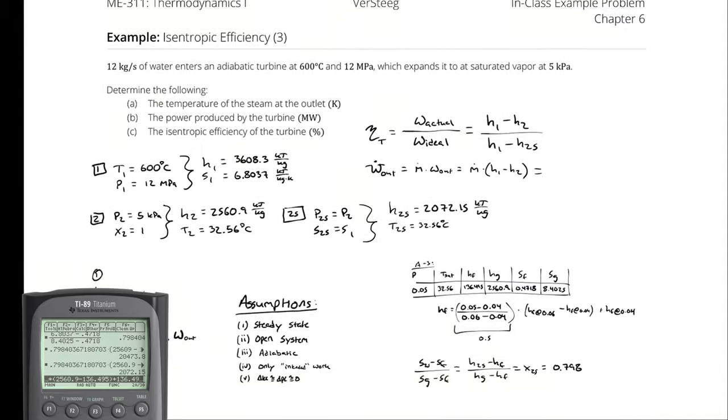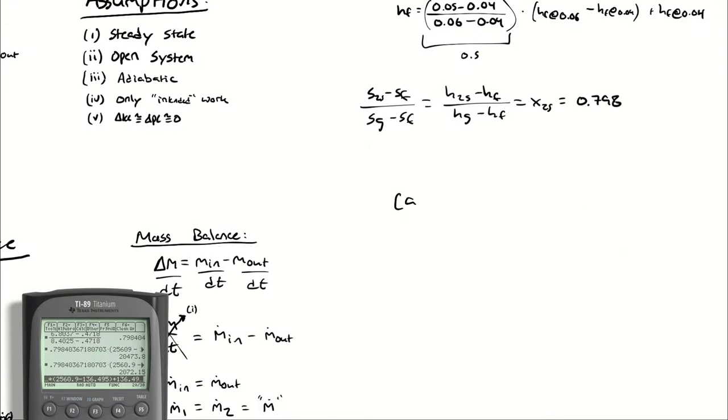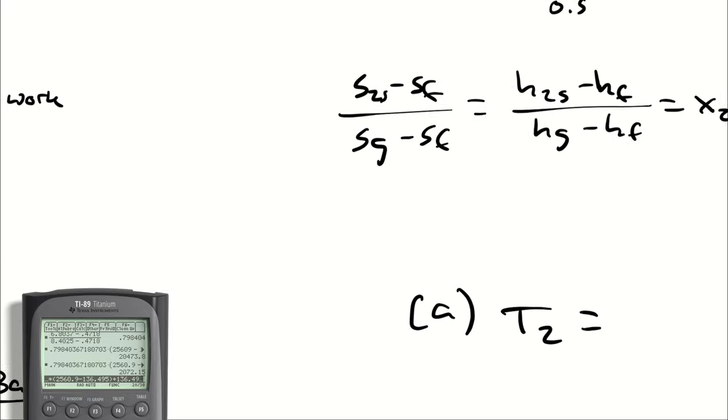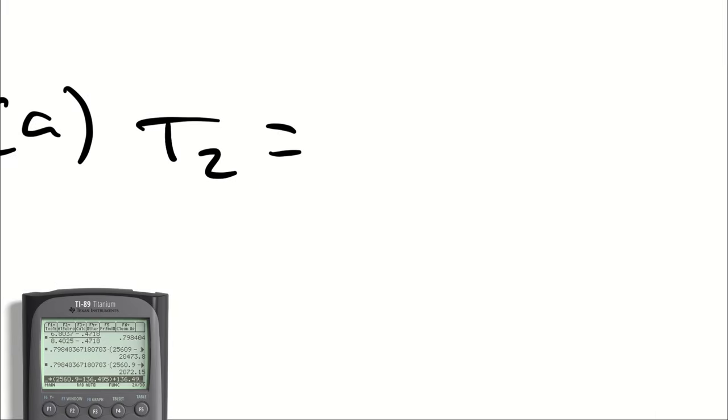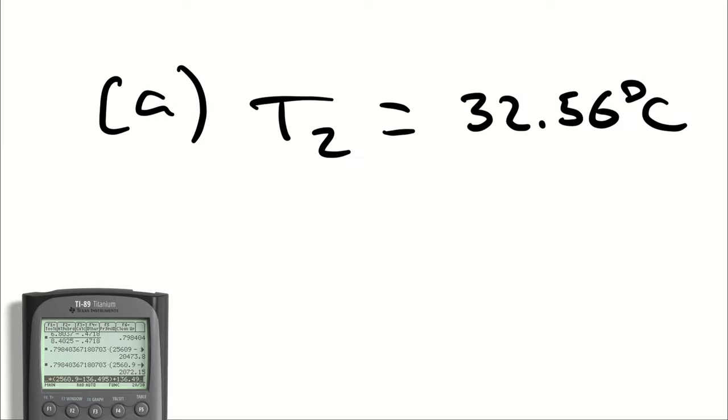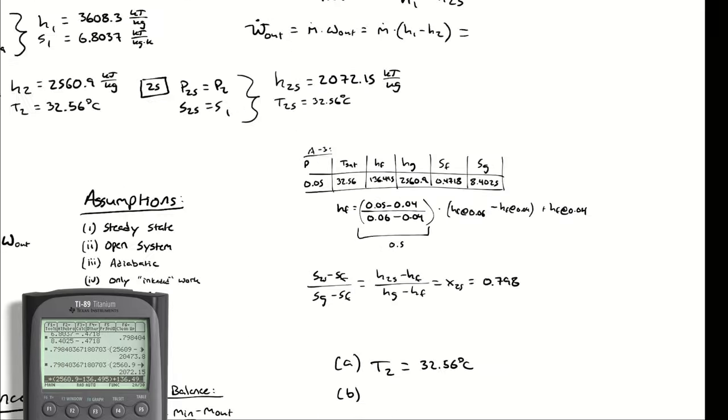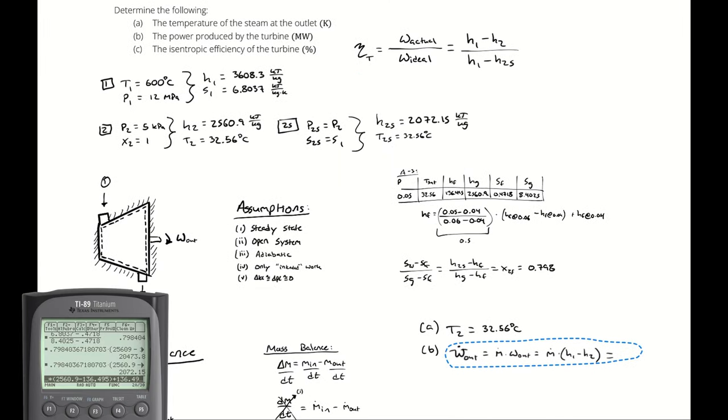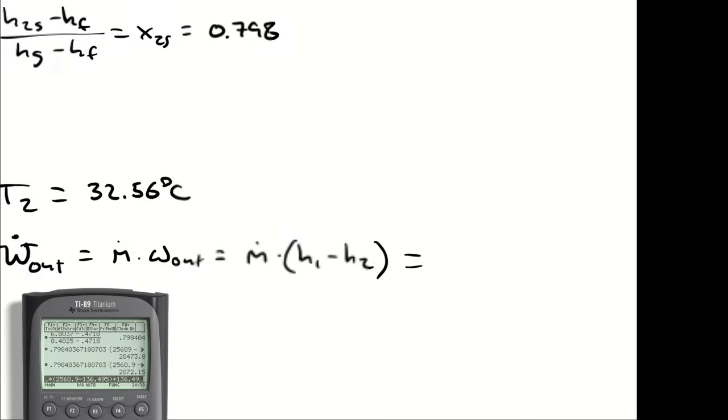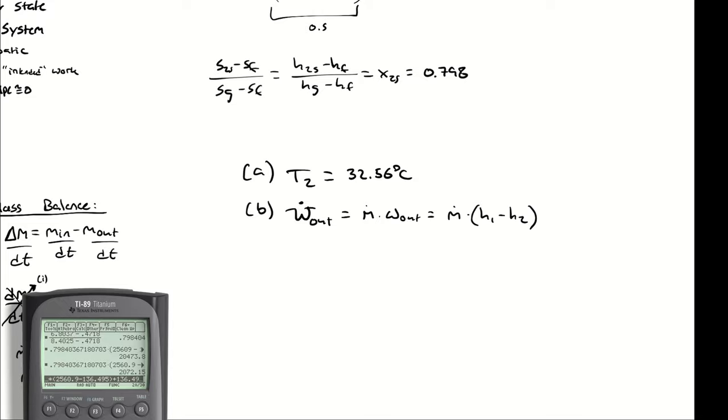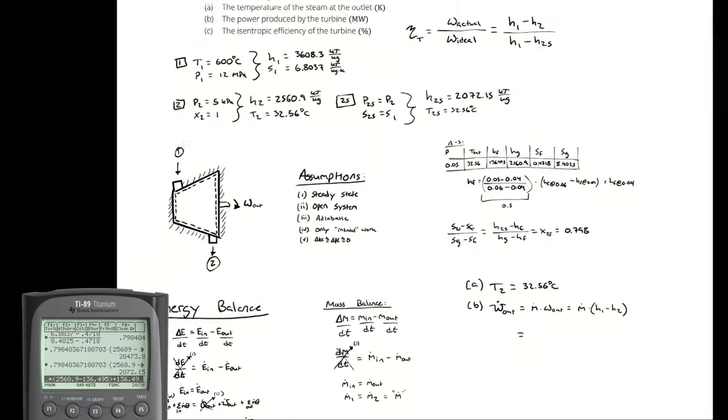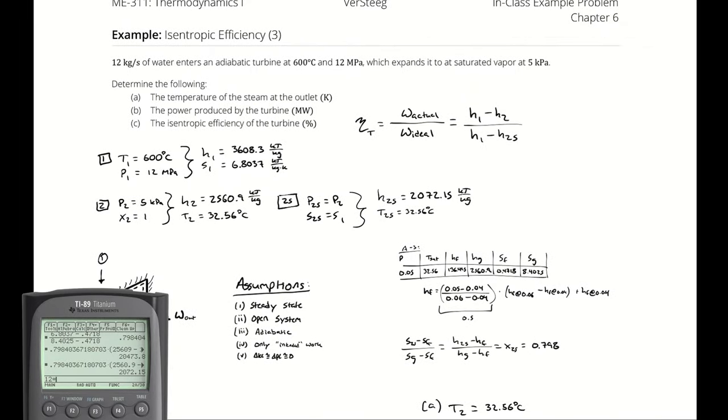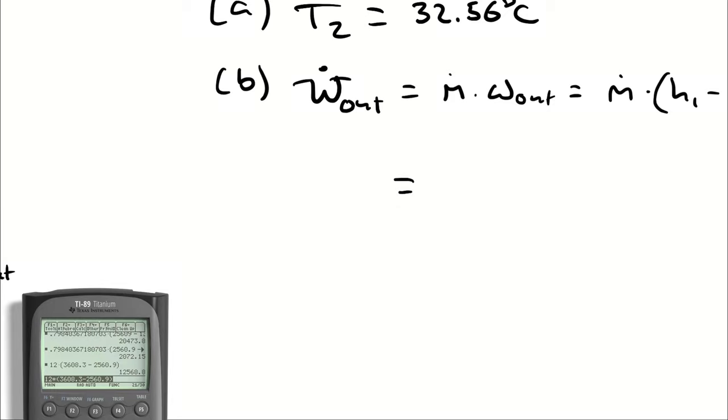But now that I have all of those, I will first figure out the power output. And you know what, I should really sort this better. Part a, T2 we determined already is 32.56. Part b is going to be the power output, which I will drag down here. Mass flow rate is 12, so I'm going to take 12 times my enthalpy difference, 12 times 3608.3 minus 2560.9, and I get 12,568.8 kilowatts, which is going to be 12.57 megawatts.